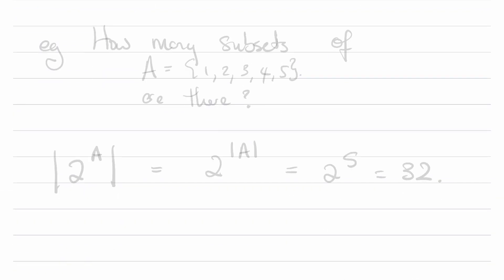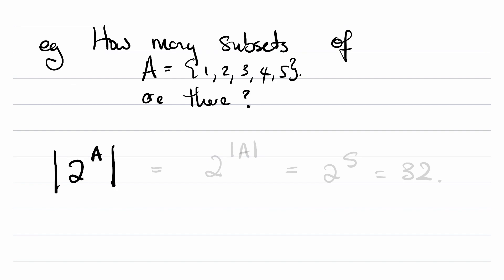Alright. Now let's just do an example. Example: How many subsets of the set that contains the integers 1, 2, 3, 4, and 5 are there? Well, now we don't have to write them down. The cardinality of the power set, which is the set of subsets, is 2 to the cardinality of A, which is 2 to the 5, which is 32.